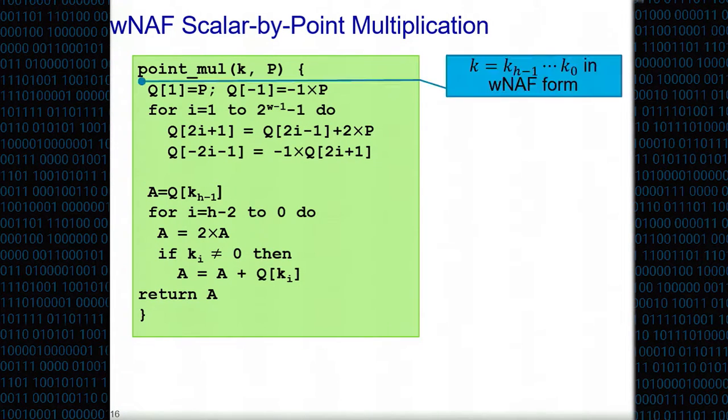The input to this algorithm is a scalar k represented in the w-NAF form, so we assume k_(h-1) down to k_0 are its digits, and a point p. It produces what's known as k cross p, the scalar by point multiplication of k and p. The first thing this algorithm does is it computes a precomputation table q. The invariant is that in the i-th location of q, q[i] is the same as taking i as an integer and computing cross product with p. So q of i is i cross p.